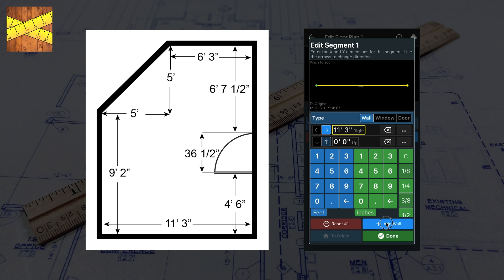Add another wall, and for the next dimension, tap the up arrow or Y dimension, then enter 4 feet and 6 inches.